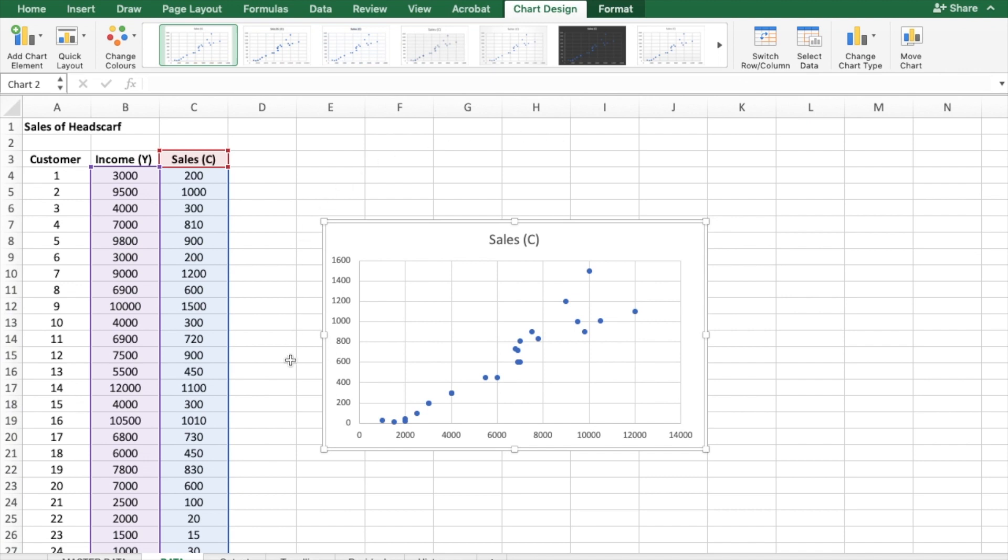So now you can see Microsoft Excel has automatically generated a trend line over here. So by looking into this scatter plot, one thing we are very sure is that it's a straight line here. It's an upward trend, where it shows that there is a positive relationship. You can see in your x-axis, we have the disposable income, and on the y-axis, we have your sales.